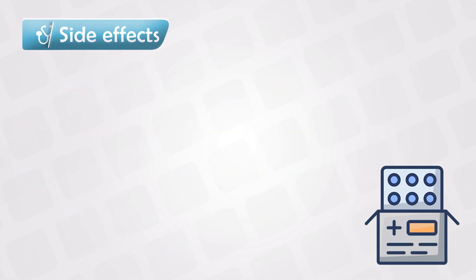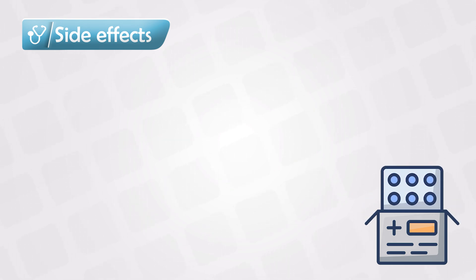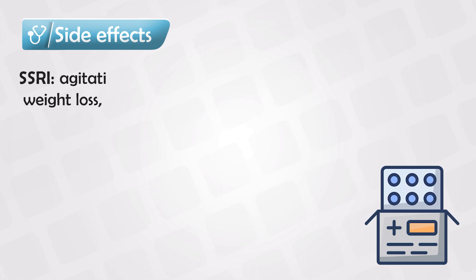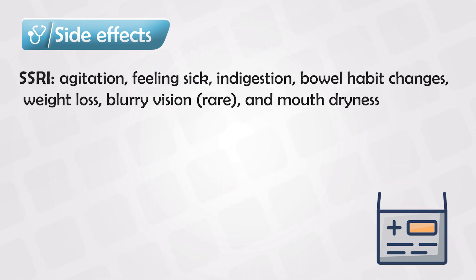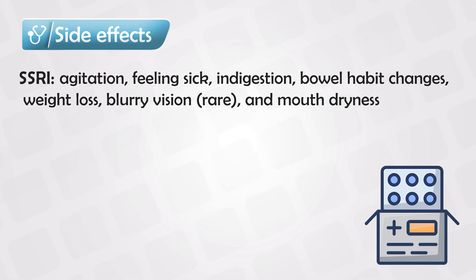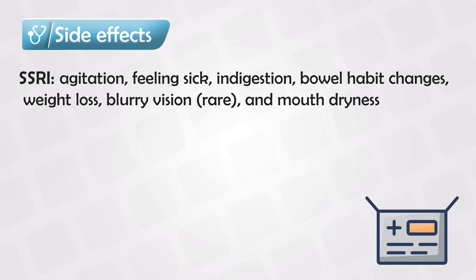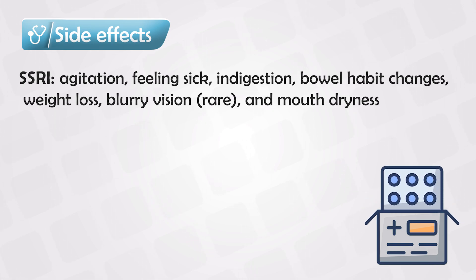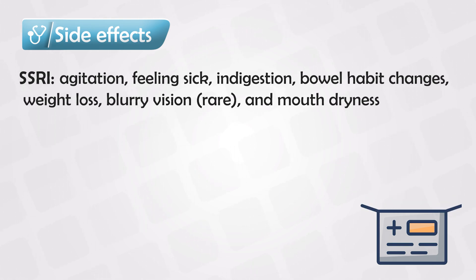Now let's look at the classes and their side effects. The first class and first-line treatment is SSRIs — Selective Serotonin Reuptake Inhibitors. The most common side effects include agitation, feeling sick, indigestion in some patients, change in bowel habits such as diarrhea or constipation, loss of appetite and weight loss, blurry vision in some patients, and dry mouth. These side effects vary from one patient to another and take some time to develop.